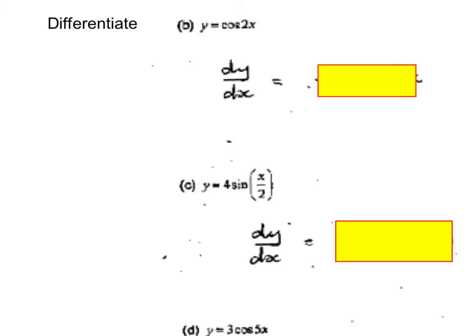Differentiating 2x is 2. Differentiating cos 2x is minus sine 2x. Put them together and then you will have minus 2 sine 2x.